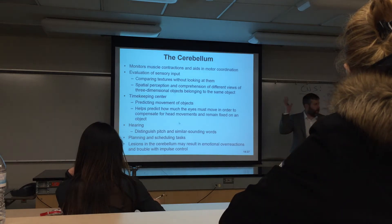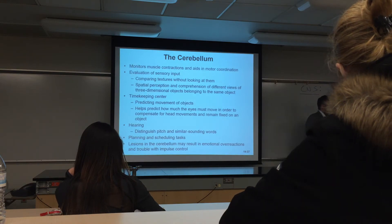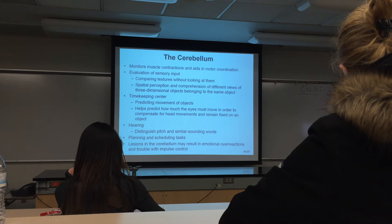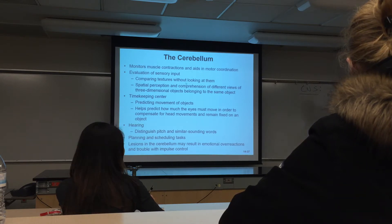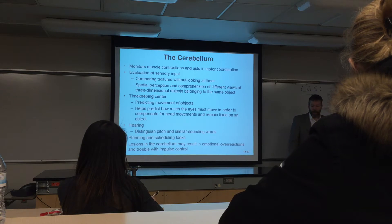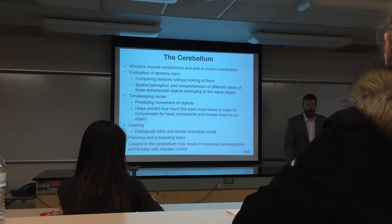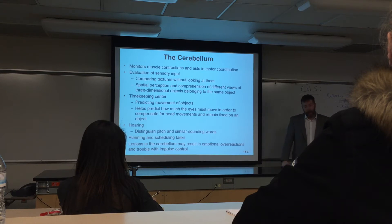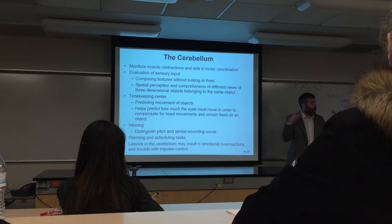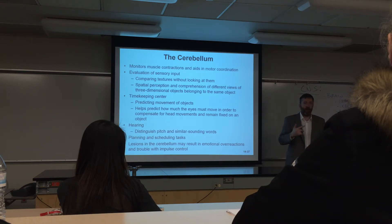Some individuals with damage to the cerebellum — for example, describing textures without looking at them. If there is a piece of velvet, with an intact cerebellum you can look at it and think it's going to feel smooth. But with cerebellum damage, you can touch it, feel that it's smooth, but not be able to make sense of what you're feeling.